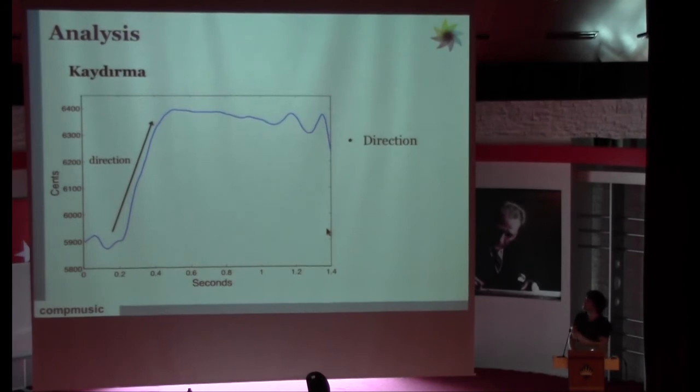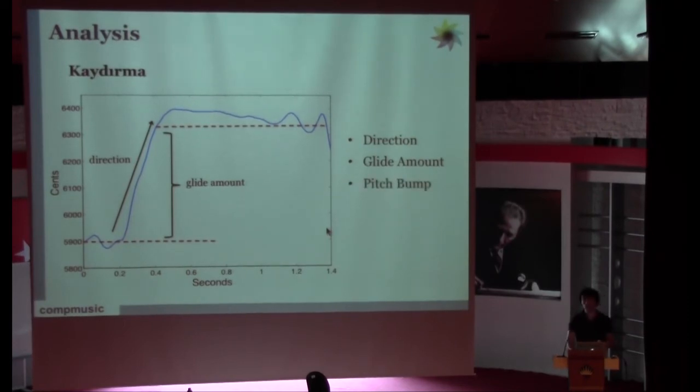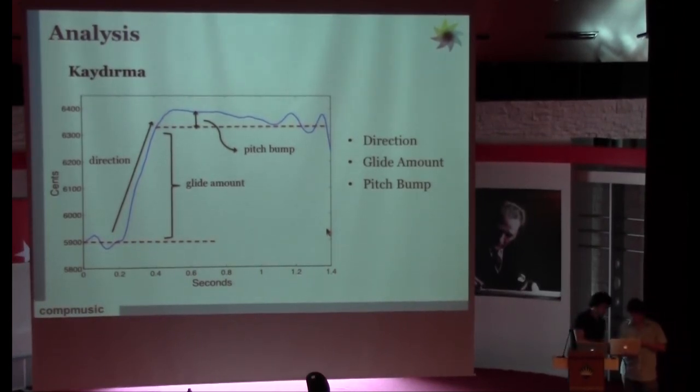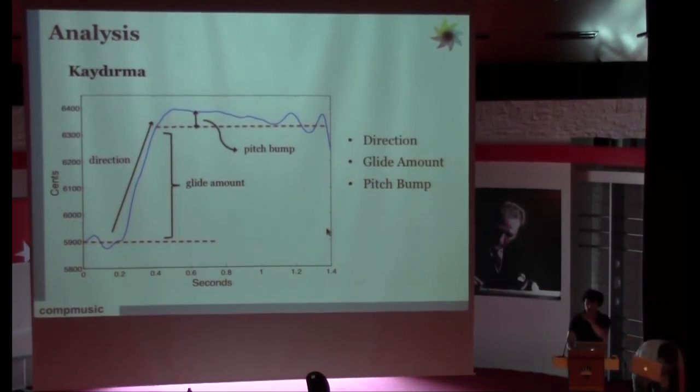For kaydirma, as far as you can see, it's a kind of connecting, maybe like a portamento. These things are obvious: the direction—ascending or descending—glide amount, starting and ending. But again, another characteristic is what we call pitch bump. I don't know how to call it; I couldn't find a Turkish equivalent. It's really characteristic. Before the second note, there is usually this pitch bump. Sometimes it is higher, sometimes lower, but it's really characteristic. If you played kaydirma again, players go a little bit up and then go to the transition note.